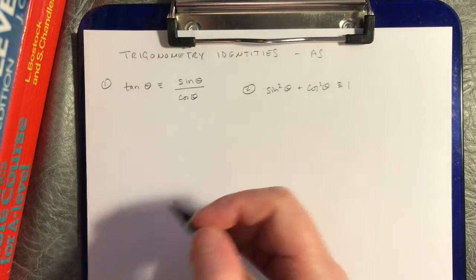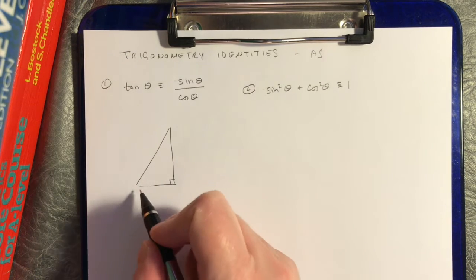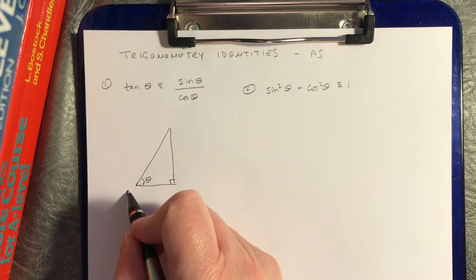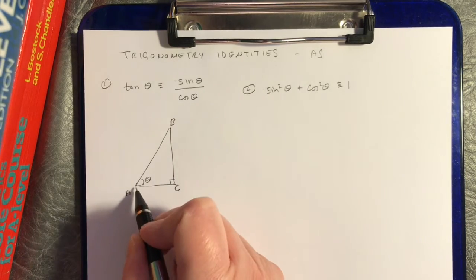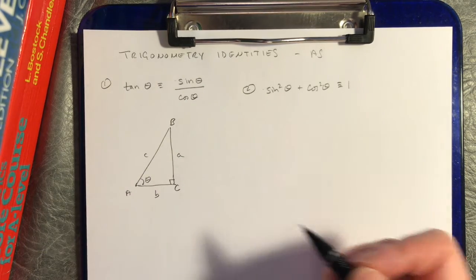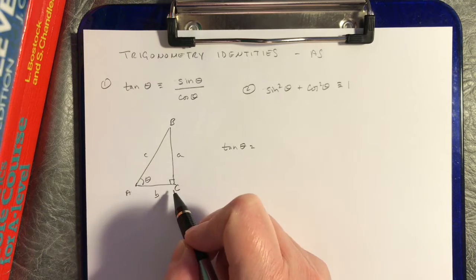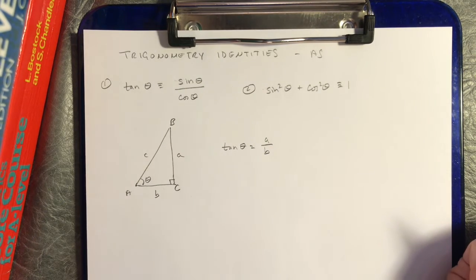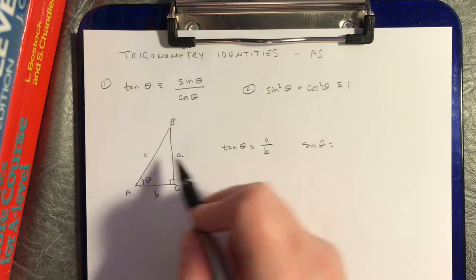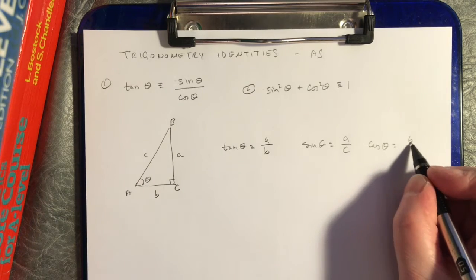First I want to show you a proof of this. Trigonometry is all about right triangles, so I like to do my proofs using right triangles where I can. Let's put the angle theta down in the bottom corner and label the triangle vertices with capital letters and the sides opposite with little letters. The tangent of theta involves the opposite side divided by the adjacent side — that's A over B. The sine of theta is A divided by C (opposite over hypotenuse) and cosine is B over C (adjacent over hypotenuse).